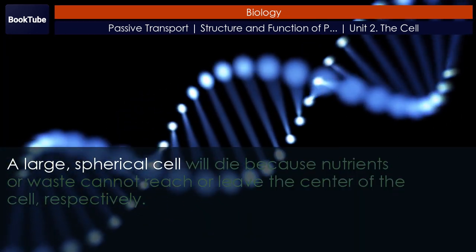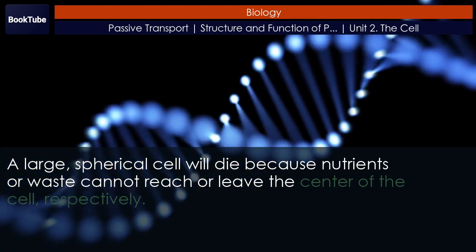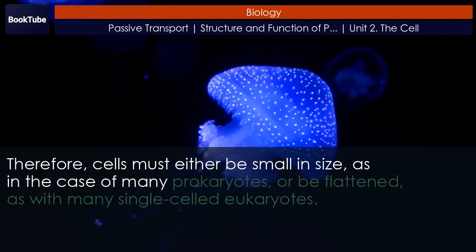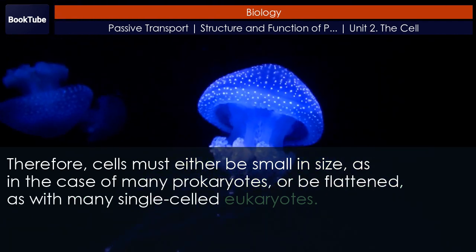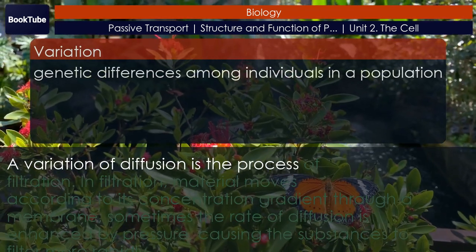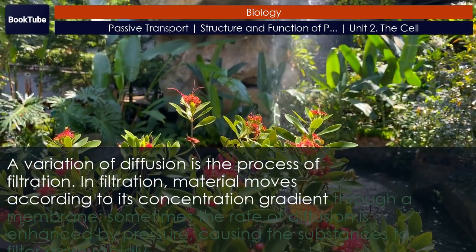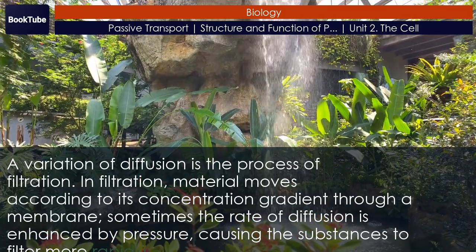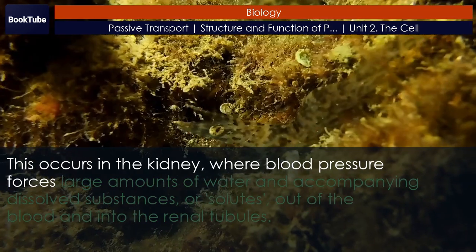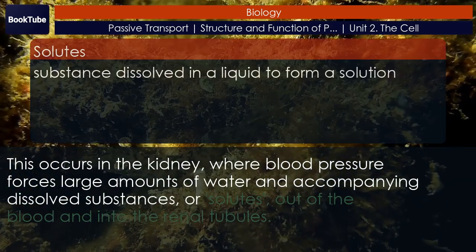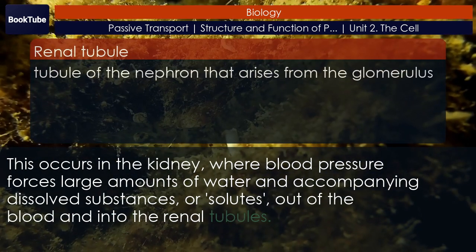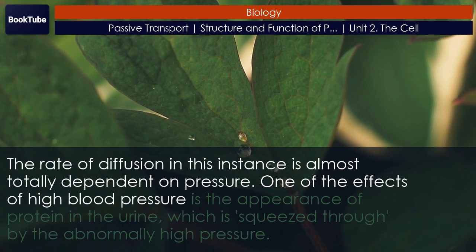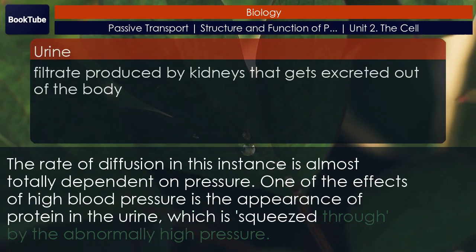A large spherical cell will die because nutrients or waste cannot reach or leave the center of the cell, respectively. Therefore, cells must either be small in size, as in the case of many prokaryotes, or be flattened, as with many single-celled eukaryotes. A variation of diffusion is the process of filtration, in which material moves according to its concentration gradient through a membrane. Sometimes the rate of diffusion is enhanced by pressure, causing the substances to filter more rapidly. This occurs in the kidney, where blood pressure forces large amounts of water and accompanying dissolved substances, or solutes, out of the blood and into the renal tubules. The rate of diffusion in this instance is almost totally dependent on pressure. One of the effects of high blood pressure is the appearance of protein in the urine, which is squeezed through by the abnormally high pressure.